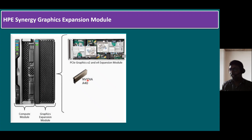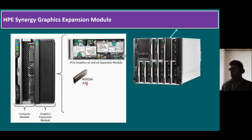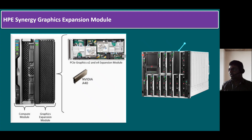One example of a GPU processor model is the NVIDIA A40. Not only the A40 — we have other models also, like A140 GB and A180 GB. Within the Synergy frame, we have compute modules and storage modules, but when we plan for the graphics expansion module, we have to remove one compute module and place the graphics expansion module there. This expansion module allows placement of GPU processors — graphics processing units — minimally two and maximum four within this expansion module.